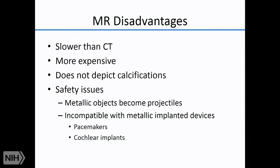MRI is a more expensive device, it doesn't show calcifications, and there are critical safety issues that must be deeply understood by people working around MRI — metallic objects can become lethal projectiles, and incompatible implanted devices such as pacemakers or cochlear implants can malfunction if a patient is inadvertently placed in the magnet.